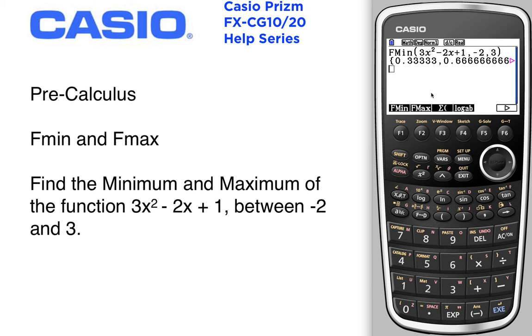Function maximum starts looking from the left to the right. Function maximum for the same function 3x squared minus 2x plus 1 between negative 2 and 3.